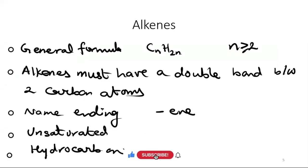The alkenes have the general formula CnH2n and the value of n must be greater than or equal to 2. Alkenes must have a double bond between carbon atoms, they are unsaturated hydrocarbons, and the name ending is -ene.